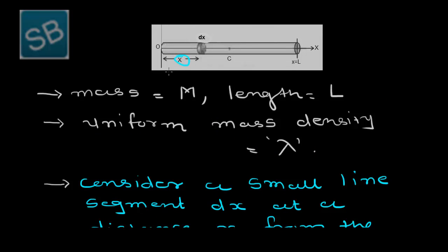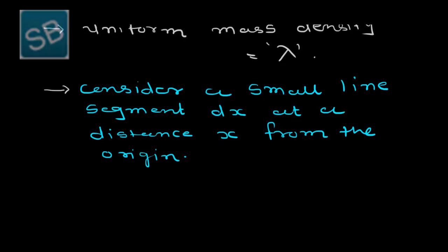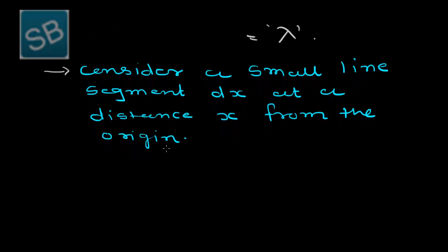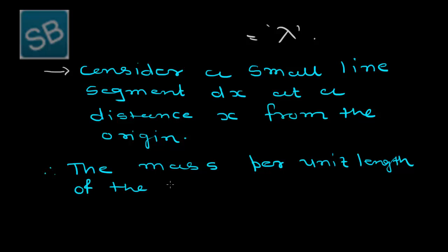Here the distance x and the line segment is shown. Now, what is the definition of density? According to the density, the mass per unit length is called mass density. Therefore, the mass per unit length of the rod is equal to lambda and that is equal to M by L.